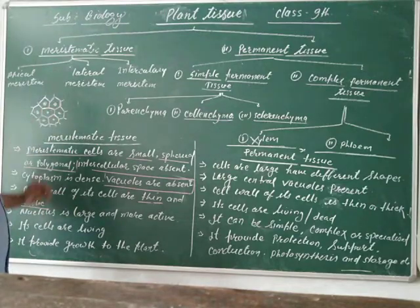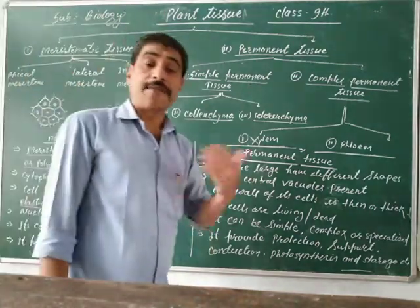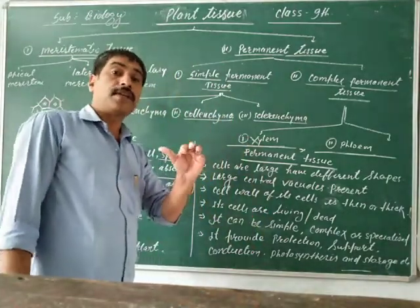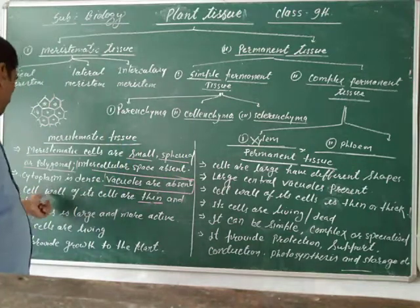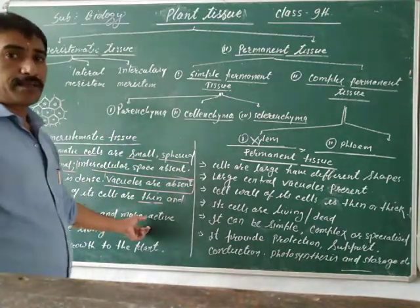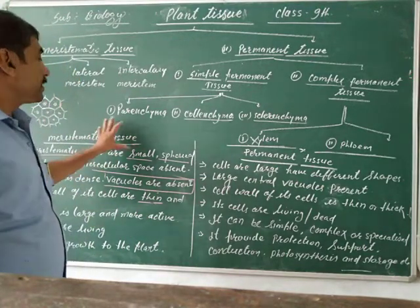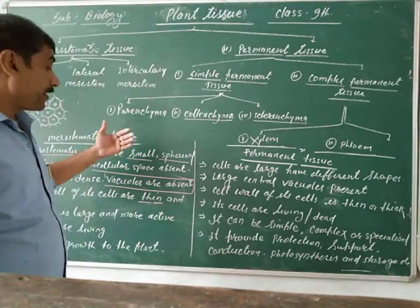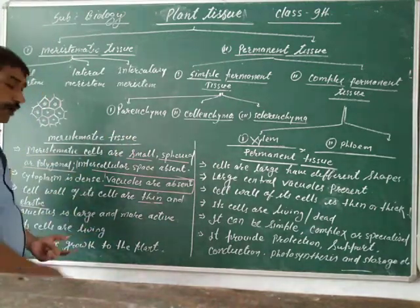The nucleus is large, because it is a dividing and very active cell. The meristematic cells have a large nucleus and are more active, as they continue to divide.